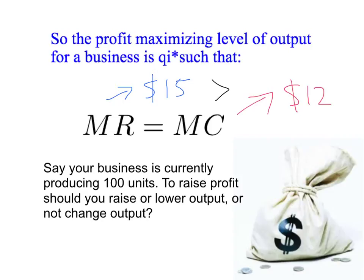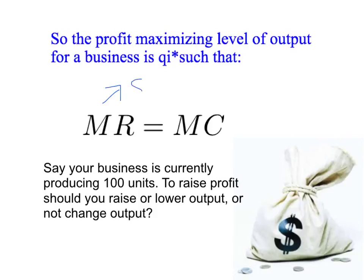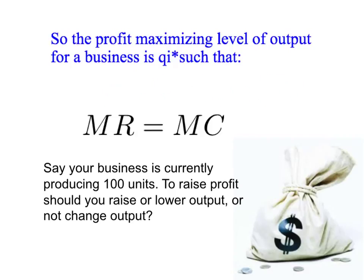So when marginal revenue is greater than marginal cost, you want to expand your output. But what would happen if the marginal revenue of the 101st unit was $15, but the marginal cost was $17? In that case, marginal cost is greater than marginal revenue, and you certainly do not want to produce the extra unit. If you produce it, you only increase revenue by $15 but increase cost by $17 — you lose $2. So if marginal cost is greater than marginal revenue, you don't want to increase production. If anything, you want to decrease production.